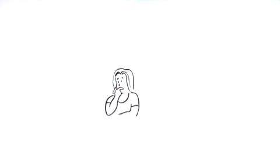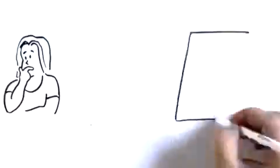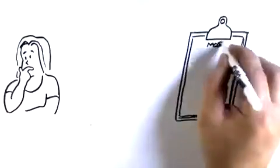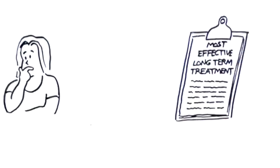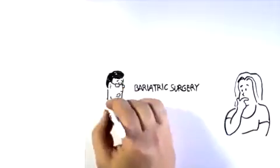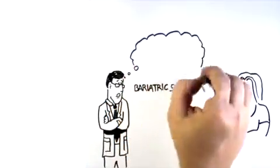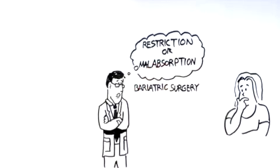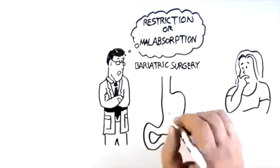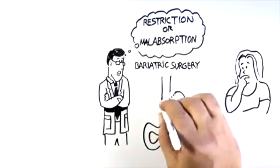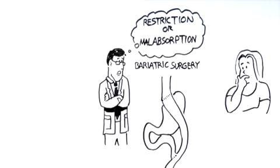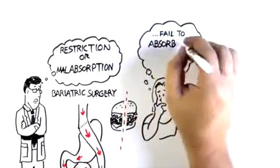One option for Amanda to consider is bariatric surgery. In study after study, it's been shown to be the most effective long-term treatment of obesity. But how bariatric surgery works is often misunderstood. Most people, even many doctors, think of bariatric surgery in terms of restriction or malabsorption. It's a reasonable assumption that surgery would work in these ways. After all, the procedures usually consist of some combination of altering stomach anatomy to be smaller, which you'd think would restrict the amount of food that you'd be able to eat, and rerouting the GI tract in a way that you'd think would make you fail to absorb the calories that you do eat.